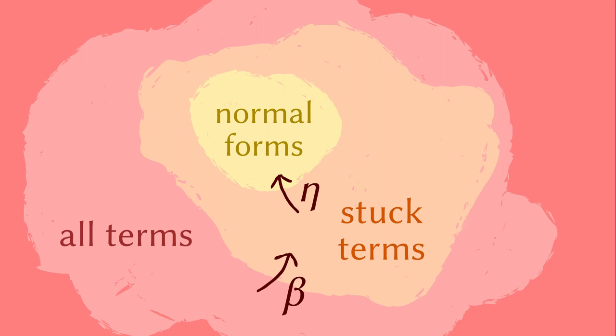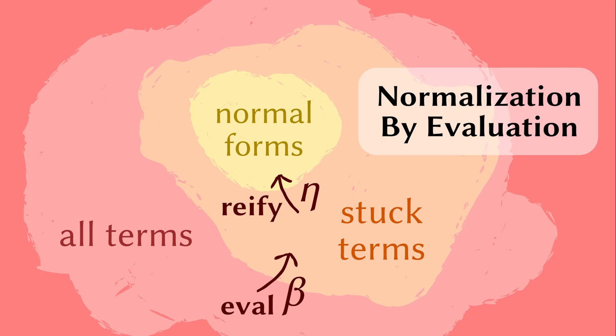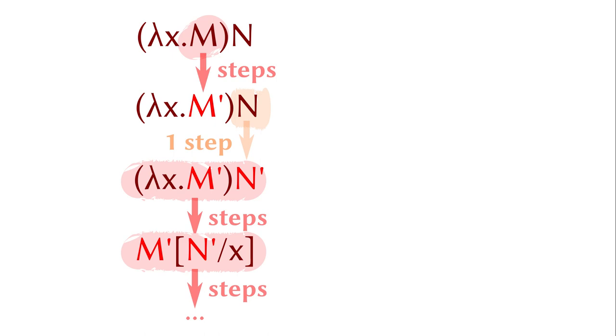This consideration led to a powerful normalization technique called normalization by evaluation. It works for a wide range of type theories. There are exactly two steps: the evaluation operation that reduces a term using the beta rules, and the ratification operation that expands reduced terms using the eta rules. I am not the one who started using this fancy word for eta expansion, but we will see why it is called ratification soon.